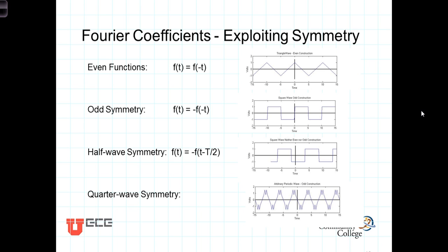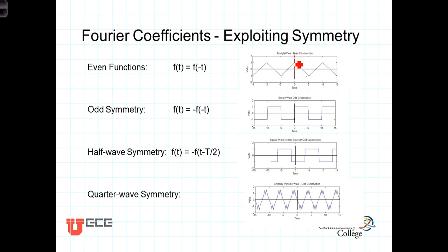Let's look at four different types of symmetry. Even symmetry is where f(t) equals f(-t). Here is f(t) — say f(5) — and there's f(-5). What we see is that the value of f(-5) is the same as the value of f(5). That's what even symmetry is. Another term for it is symmetry about the y-axis.